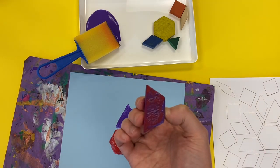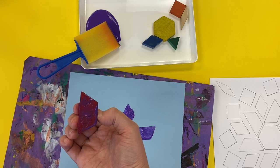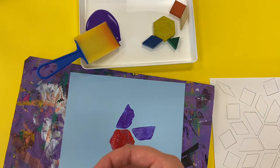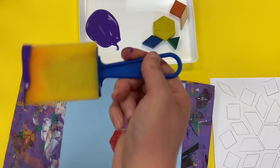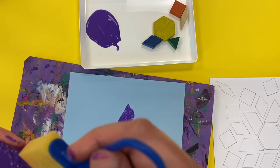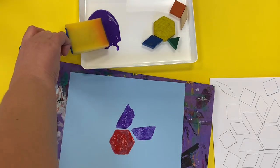But once it starts to look like this, where you can see there's not very much paint on there anymore, I would want to go ahead and put another layer of paint down before I stamped it again.